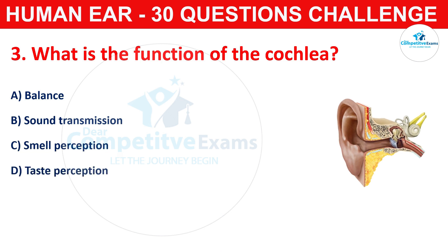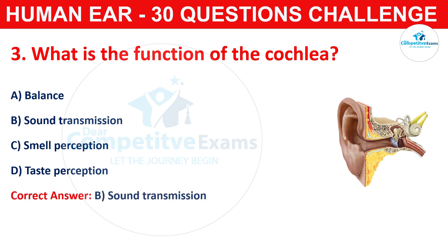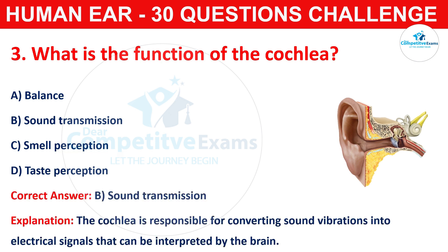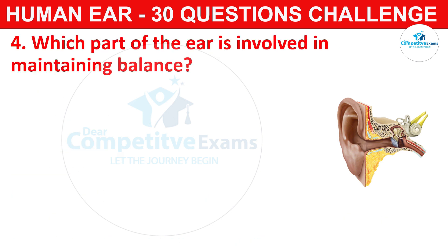Question number three: what is the function of the cochlea? Your options are balance, sound transmission, smell perception, or taste perception. The correct answer is B, that is sound transmission. The cochlea is responsible for converting sound vibrations into electrical signals that can be interpreted by the brain.